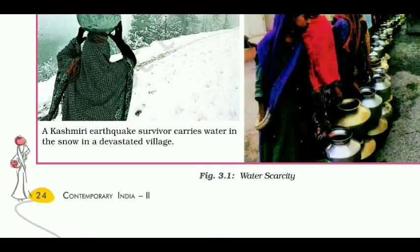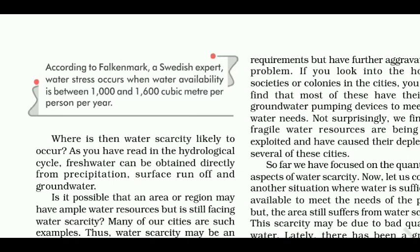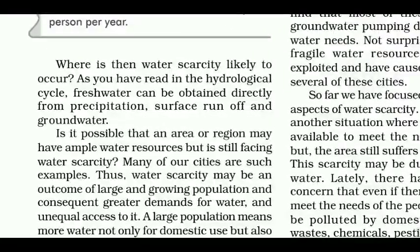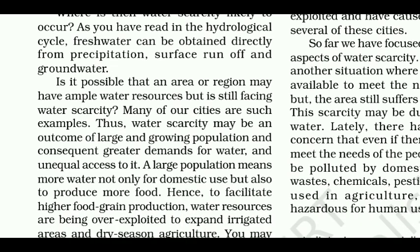According to Falkenmark, a Swedish expert, water stress occurs when water availability is between 1,000 and 1,600 cubic meters per person per year. Where is water scarcity likely to occur? As discussed in the hydrological cycle, fresh water can be obtained directly from precipitation, surface runoff, and groundwater. Is it possible that an area or region may have ample water resources but still face water scarcity?